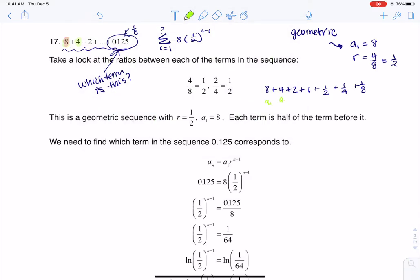So now if I count this, this was the first term, second term, 3rd, 4th, 5th, 6th, 7th. So this is a sub 7, which means that over here, I'm going to drop a 7.